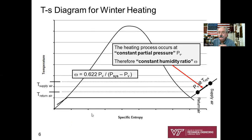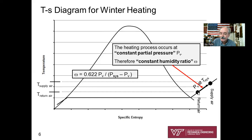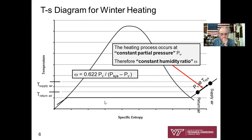Let's look at the winter heating situation on a T-S diagram. The partial pressure of vapor in the air mixture is a low number, shown far down on the vapor dome. We start at the return air partial pressure and heat that air-vapor mixture at constant partial pressure — moving from a lower return air temperature to a warmer supply air temperature. This is a constant partial pressure heating process, which is also a constant humidity ratio process.